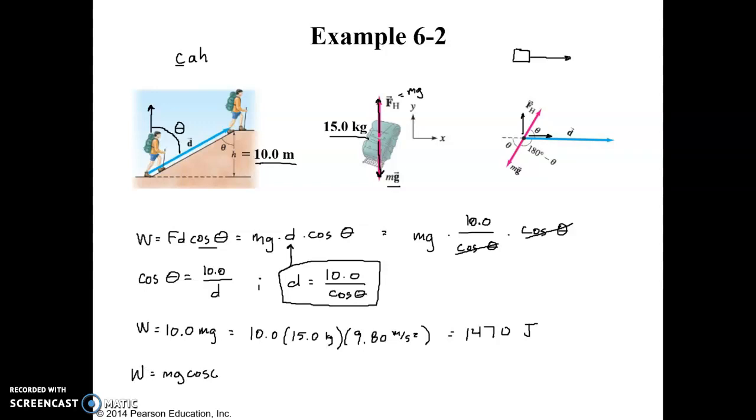mg cosine of theta. mg d, I should say mg d cosine of theta, because mg is the force, f. d is the distance traveled, cosine of theta. And if we plug in here, d is still the same.